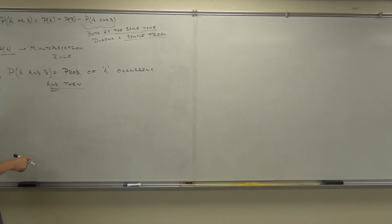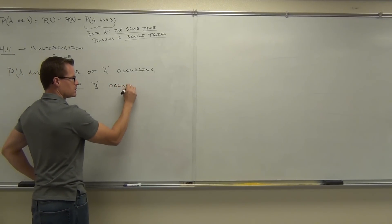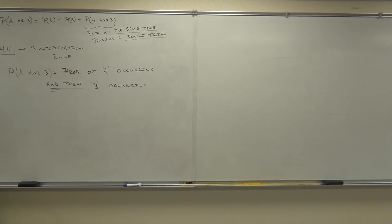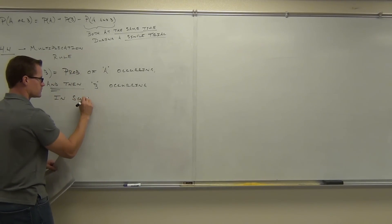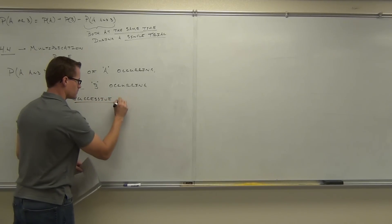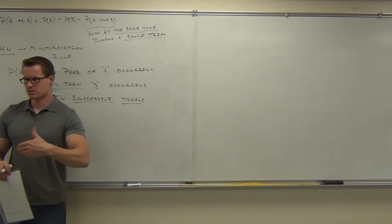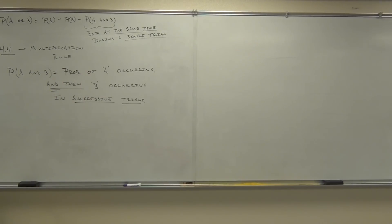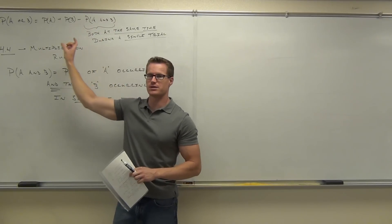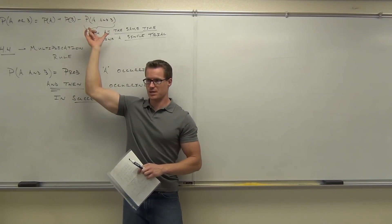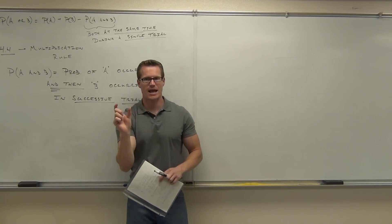The key phrase is 'and then' — not 'and at the same time.' The word 'successive' means right after each other. When you're talking about the context of an 'or' problem, the 'and' means at the same time. When you're talking about the context of an 'and' problem — that's the multiplication rule — those trials are one right after another. It's A and then B happening.